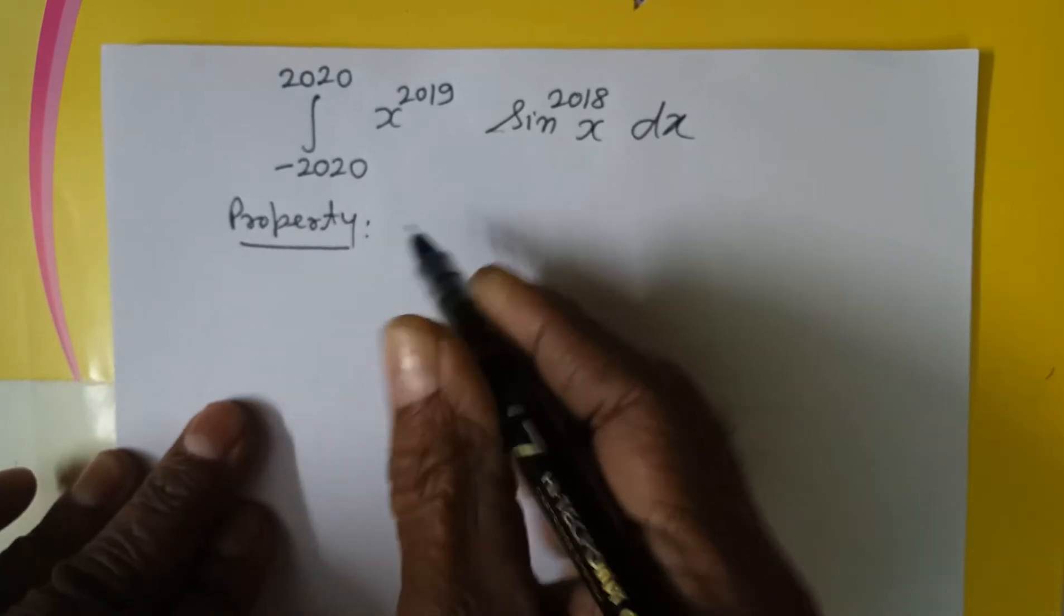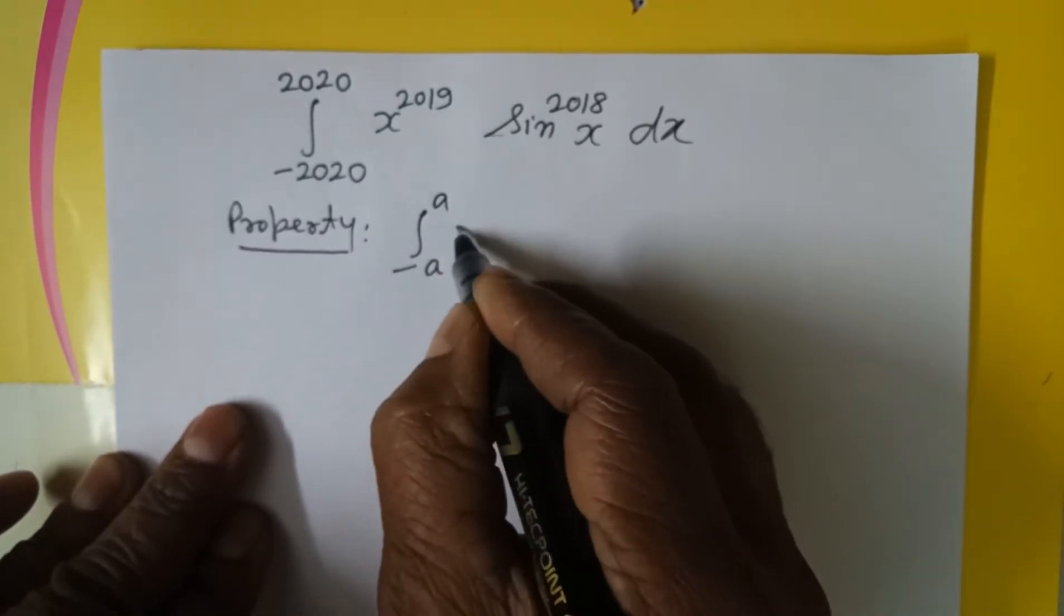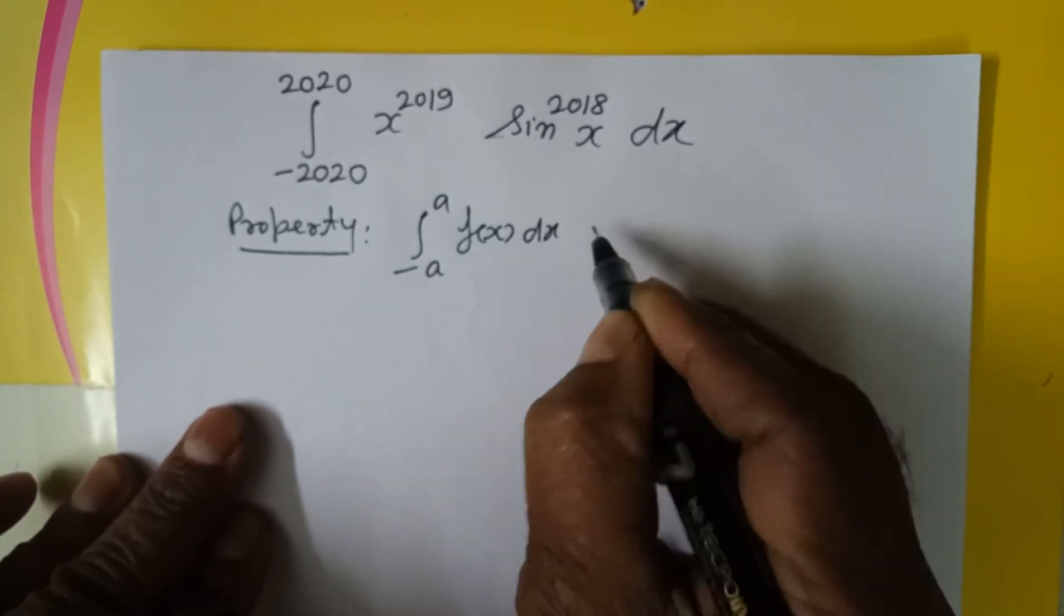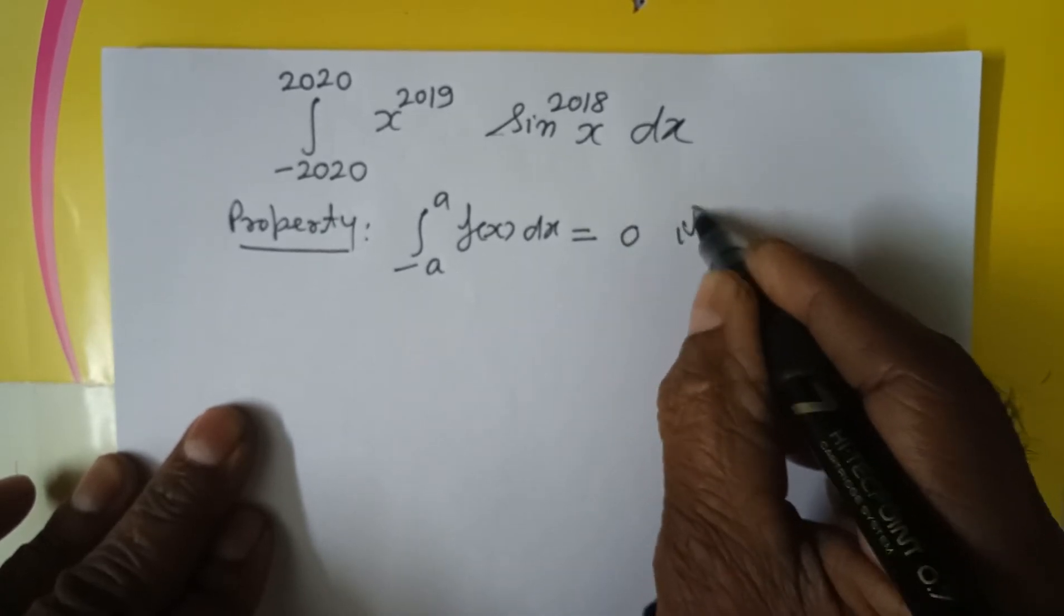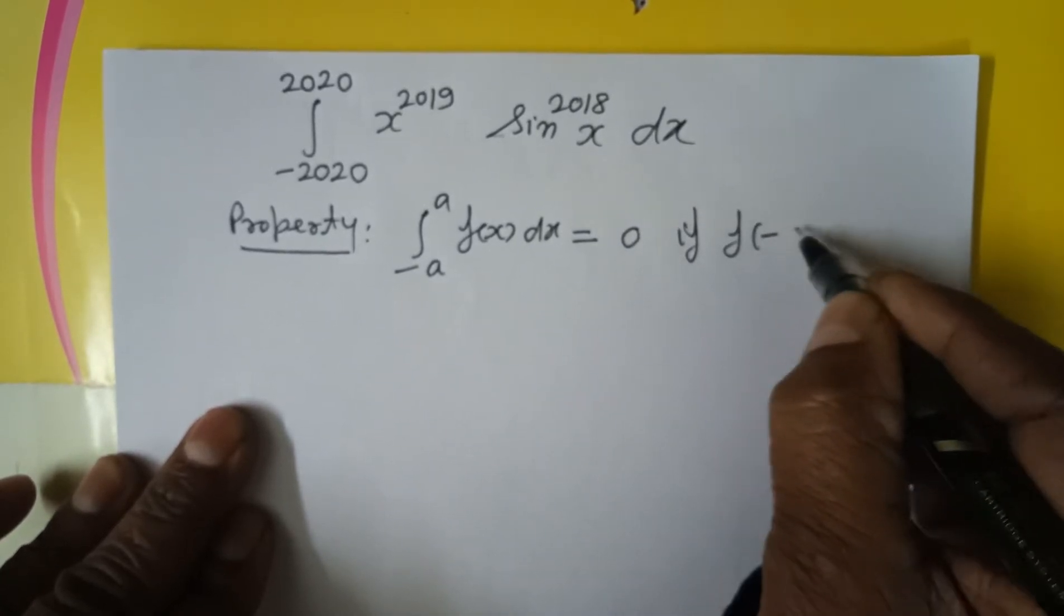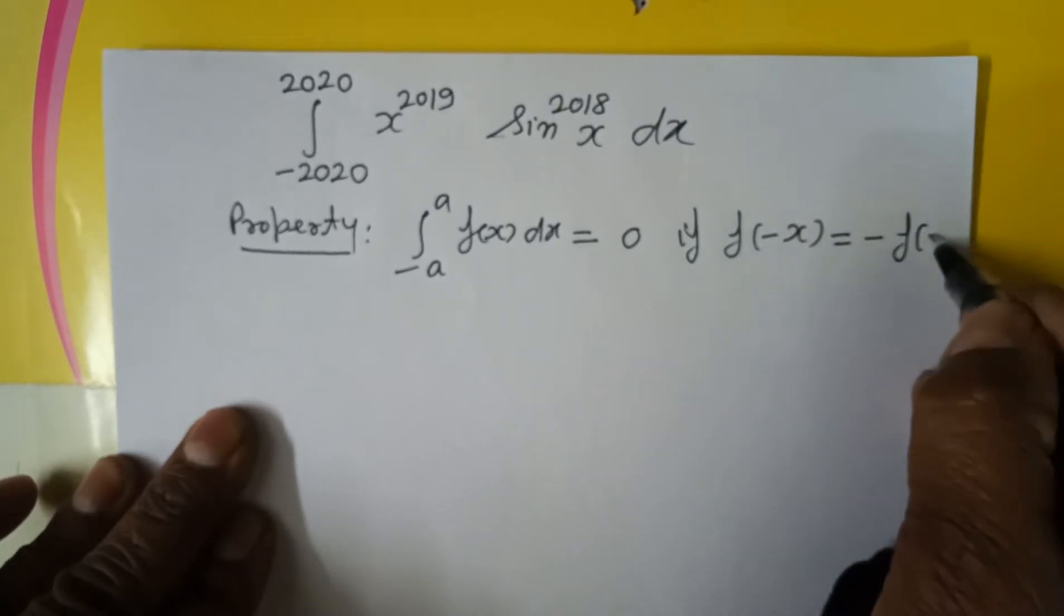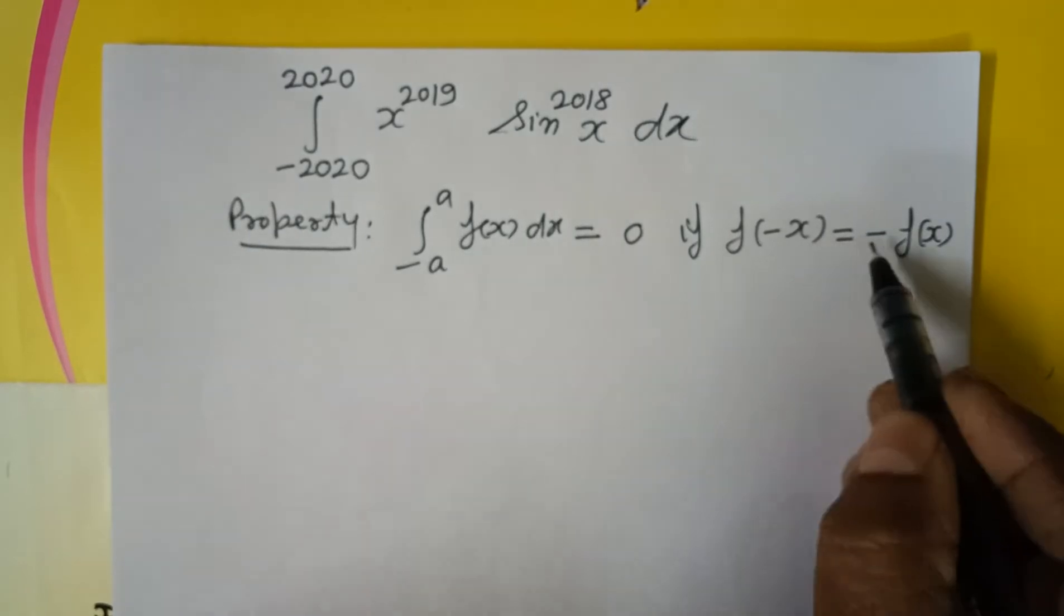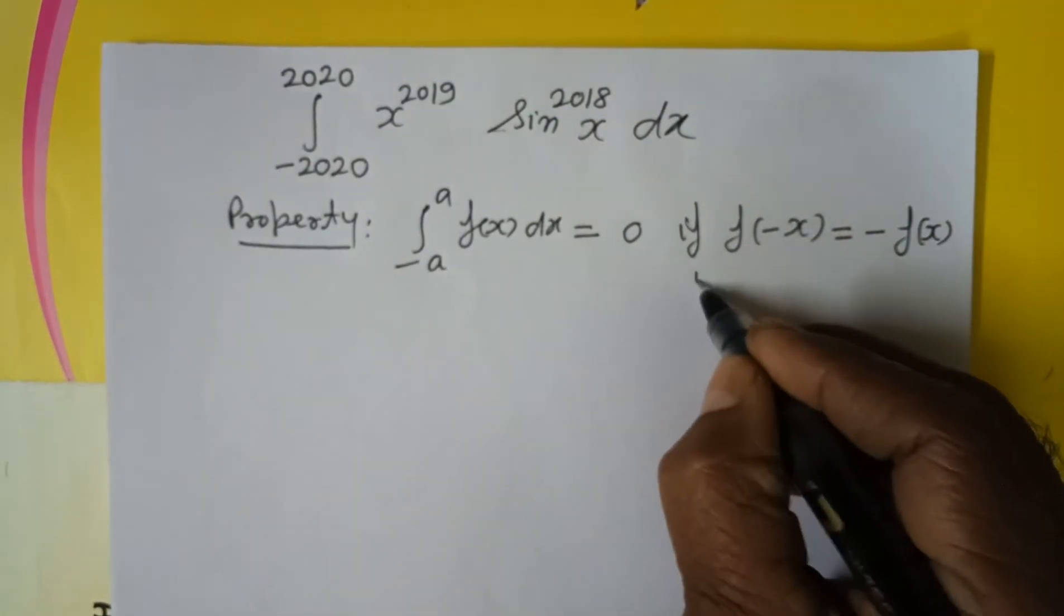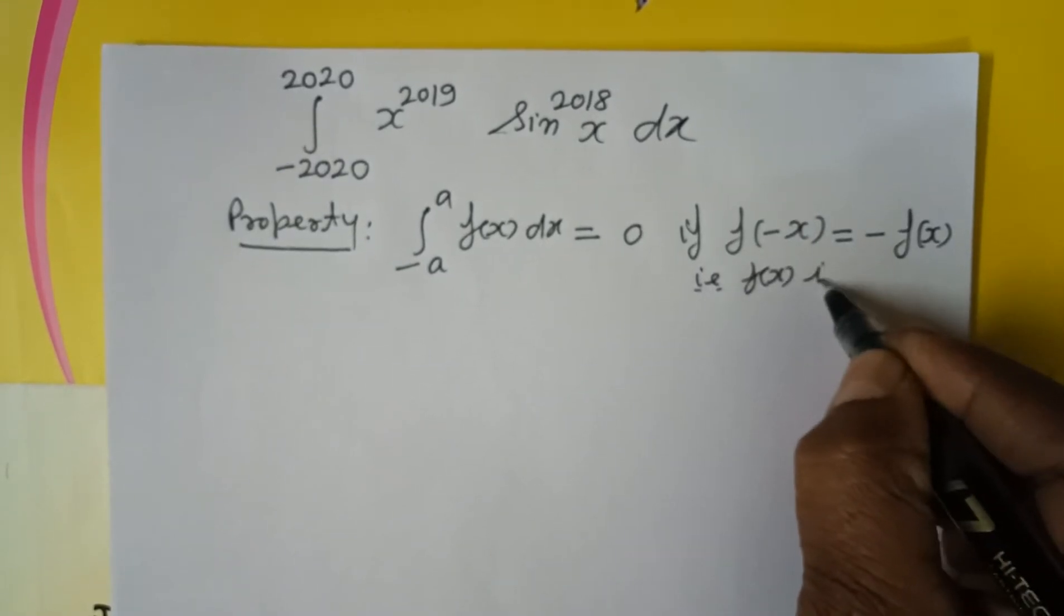The property is: integral from minus a to a of f(x) dx is equal to 0, if f of minus x is equal to minus f(x). When f of minus x equals minus f(x), then f(x) is called an odd function.